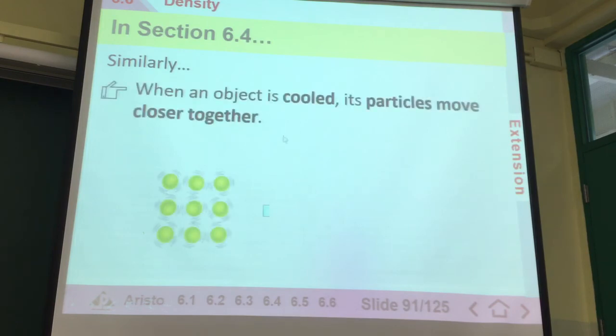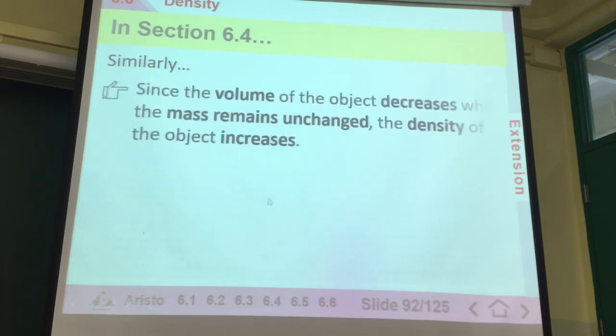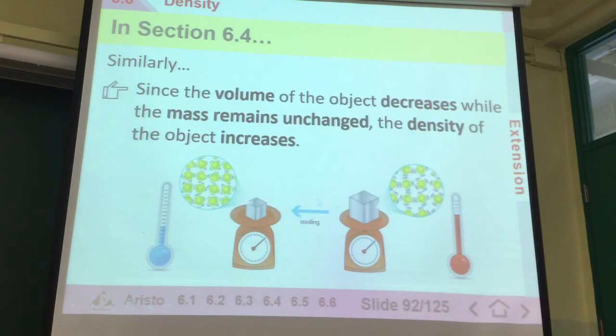Similarly, when it's cooler, in thermal contraction, the volume will be even smaller. It will contract, it will be smaller. We can see that when it contracts, the volume decreases. Mass will be the same. Therefore, the density increases. It's more dense than before. The density of the object increases.